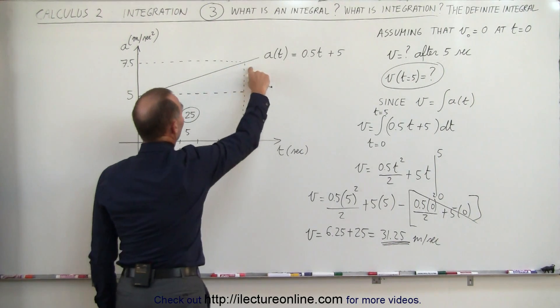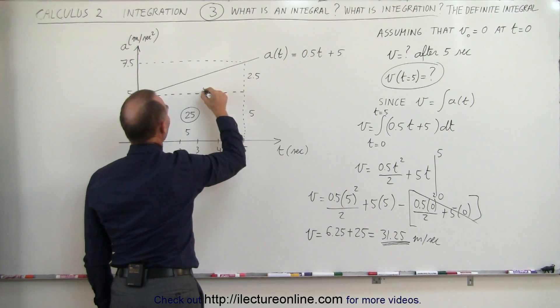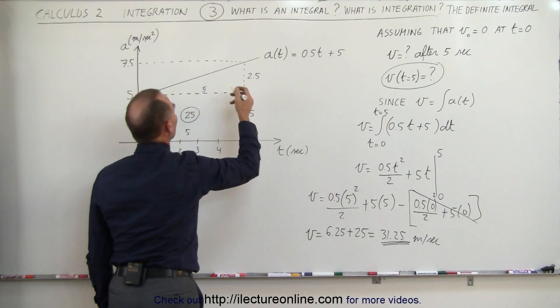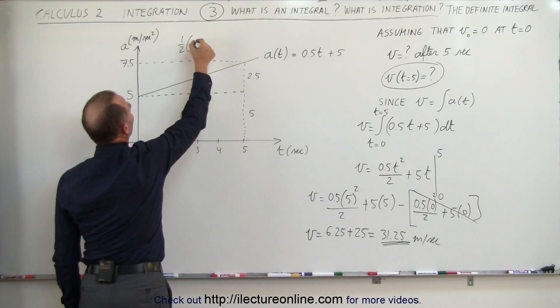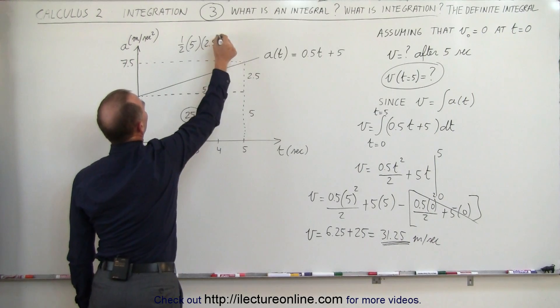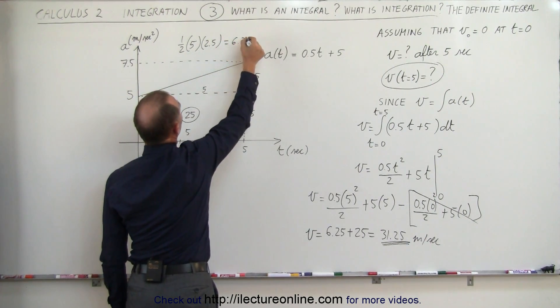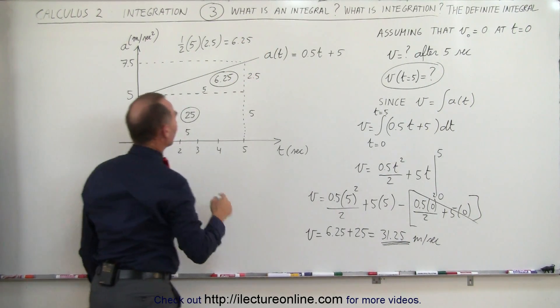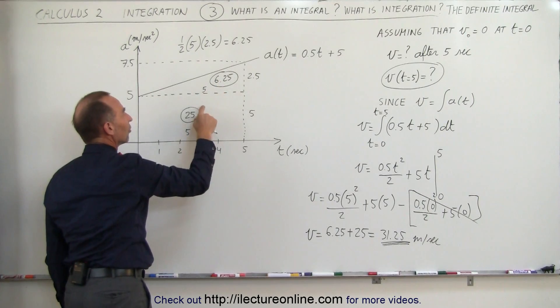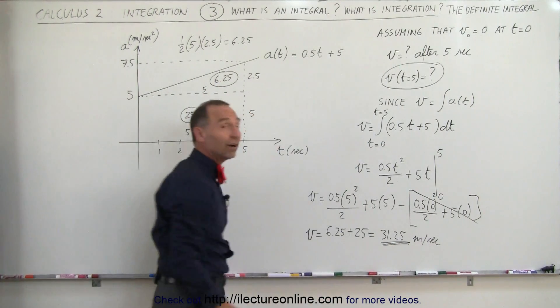Triangle, notice that it has a height of 2.5, a height in this direction of 5, and so the area of a triangle is 1 half the base times the height, 1 half the base, which is 5, times the height, which is 2.5, so that would be 2.5 plus 12 and a half divided by 2 is 6.25, so that's the area of this portion of the graph. If we add those two together, notice 25 plus 6.25 does indeed add up to 31.25.